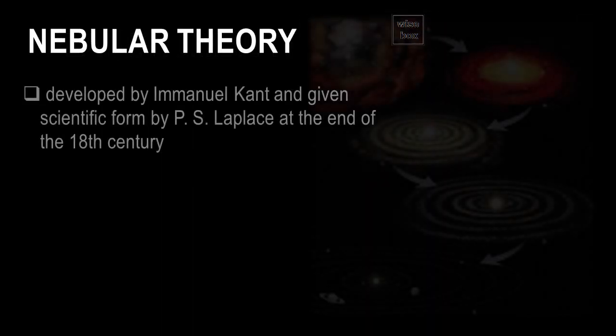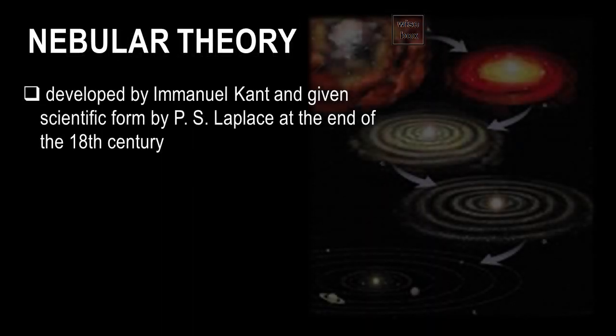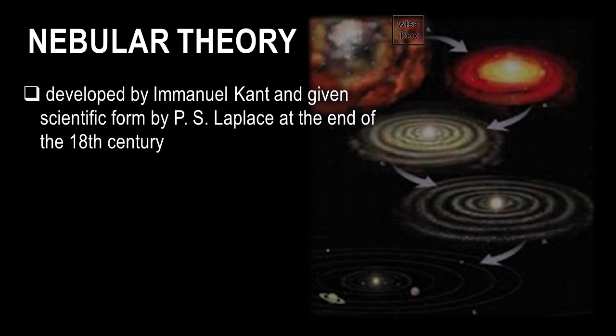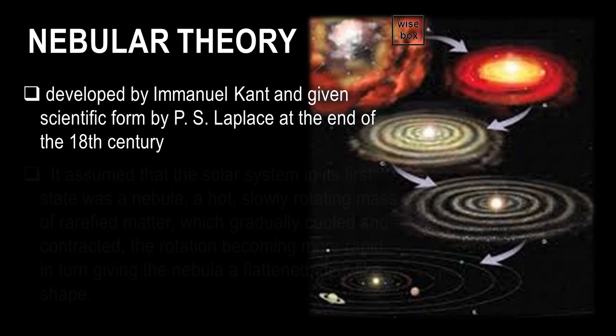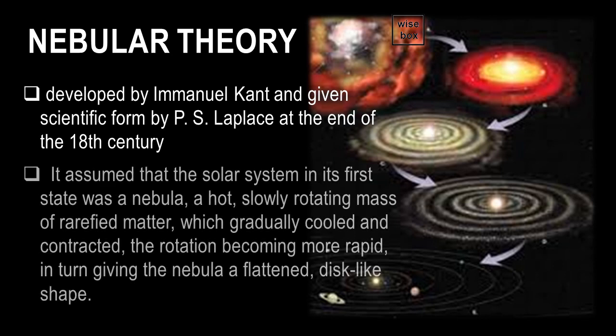The nebular theory was developed by Immanuel Kant and given scientific form by P.S. Laplace at the end of the 18th century. It assumed that the Solar System in its first state was a nebula, a hot, slowly rotating mass of rarefied matter which gradually cooled and contracted.